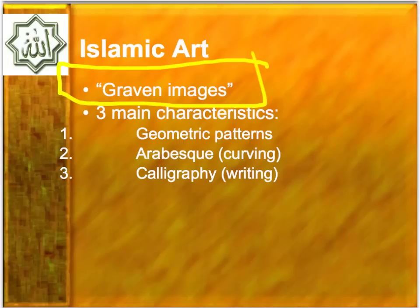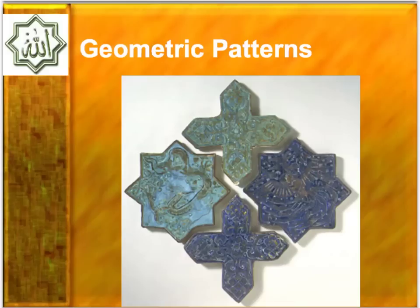With that said, they developed a style of artwork that is very unique, with three different characteristics. Geometric patterns, arabesque, and calligraphy, which is a form of writing. With these geometric patterns, you'll see a lot of symmetry and repetition — the idea of geometric interlocking patterns you'll see frequently within Islamic art and architecture.